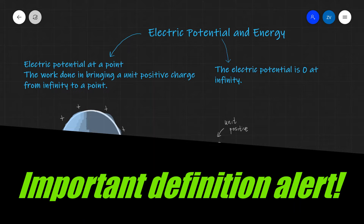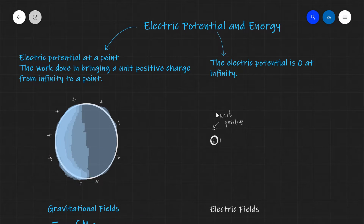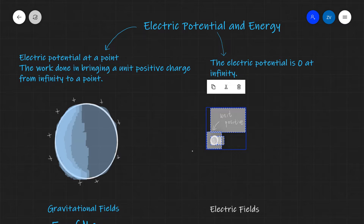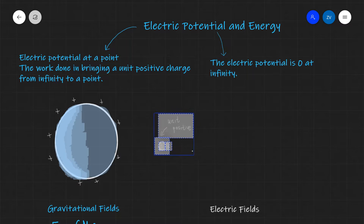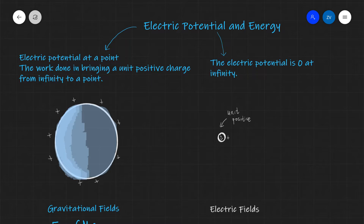This is a really important definition. The electric potential at a point is defined as the work done in bringing a unit positive charge from infinity to that point. For instance, if I have a unit positive charge in the vicinity of a sphere, those two are naturally going to repel because they're both positive. In order to bring this charge to a point on the sphere, I need to do some work — apply a force and travel a certain distance. It's also worth pointing out that the electric potential is zero at infinity, and it's really important that the electric potential is a scalar quantity.